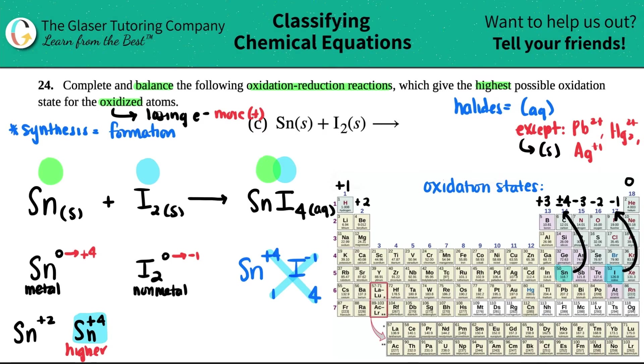Cool. Now let's just balance. I have four iodines on my product side. I got two iodines here. So it seems like I got to put a coefficient in front. What times two will get me four? Yeah, two. So I put a two here. And now let's just check. I got one tin on the reactant side. I got one tin on the product side. So that's all balanced. So this is the end result.